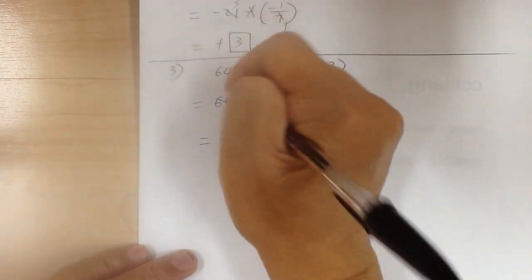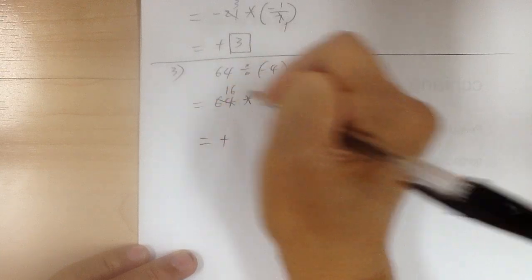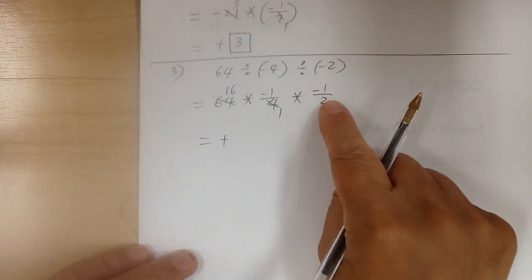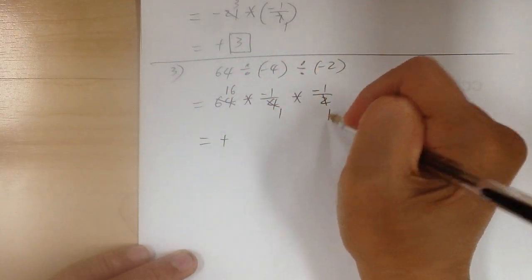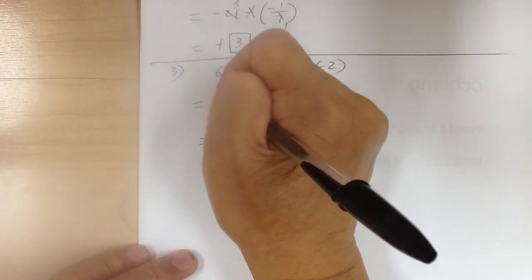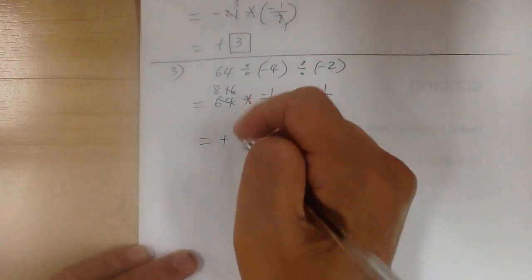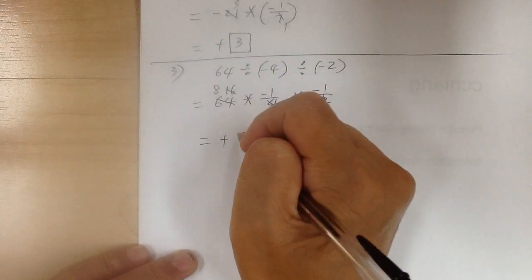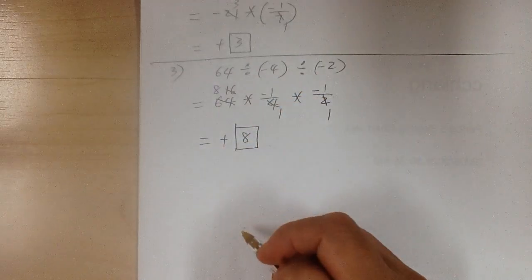So 4 and 64, you can divide by 4 to get 1 and 16. And then 2 and 16, you can divide by 2 to get 1 and 8. So the answer would be positive 8.